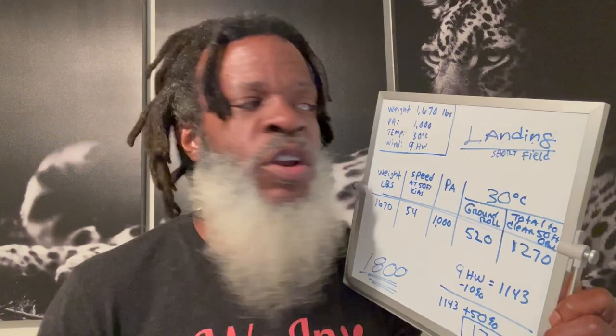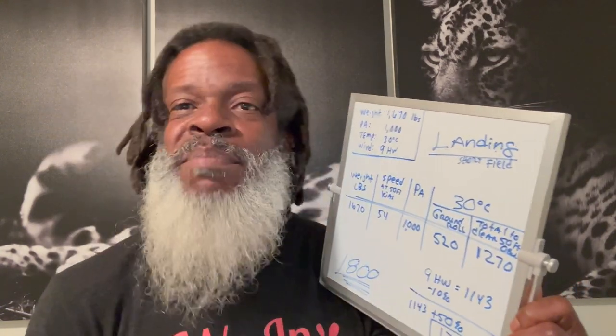It's very similar to the takeoff distance chart. We're going to make this fun by using the exact same conditions, because I want you to see how the exact same conditions impact your takeoff distance versus your landing distance. We're going to do a short field landing, just like we did a short field takeoff. Our conditions: our weight is 1670 pounds.